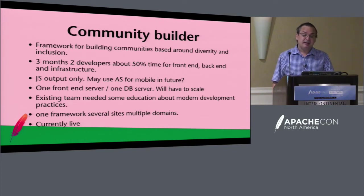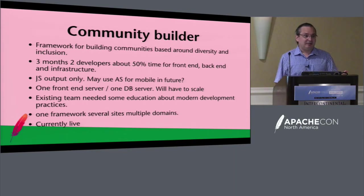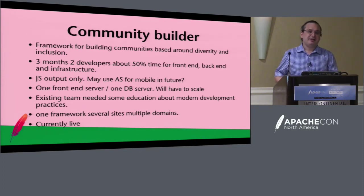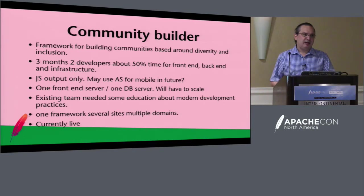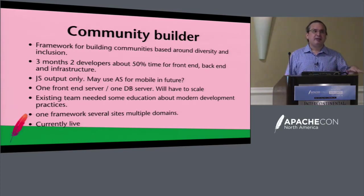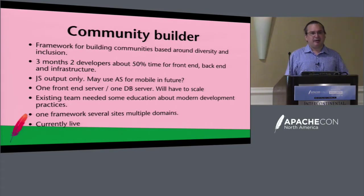The existing team needed some education about modern development practices — they didn't use version control, had no idea what CI was, and didn't even have a bug issue system. There's one framework that actually serves multiple sites and domains, with a large overlap in functionality. It is currently live and people are using it — it's a gradual rollout, and every two weeks we have another delivery where they get a big chunk of functionality.